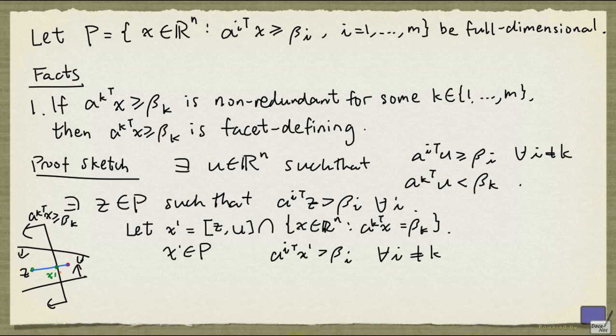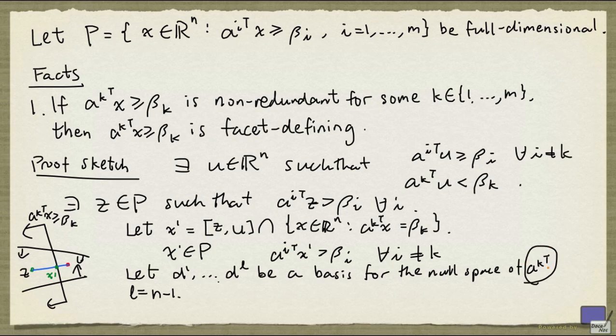And the directions in which we can move in are precisely the null space of A_k^T. So we're going to let D_1 up to D_L be a basis for the null space of A_k^T. And here L is going to be n-1, because this is a rank 1 matrix.